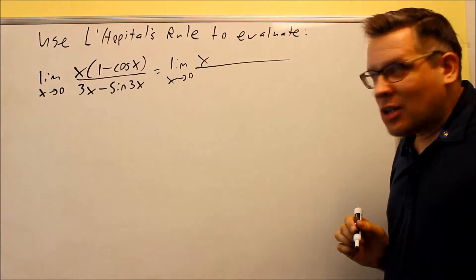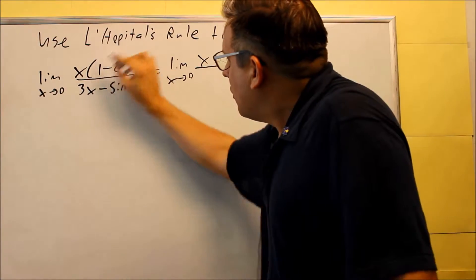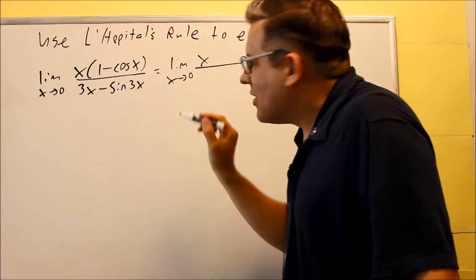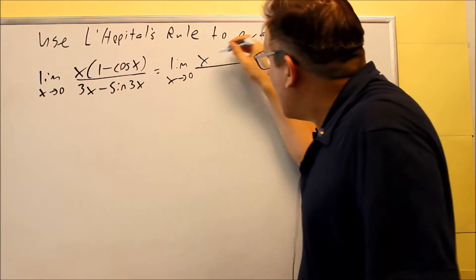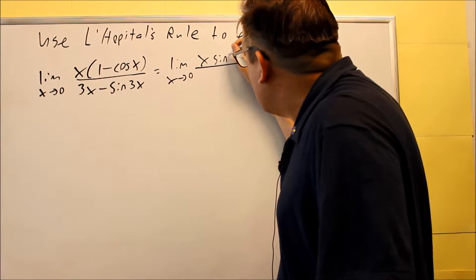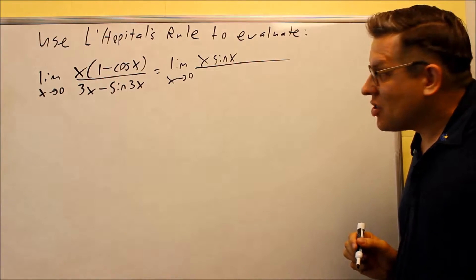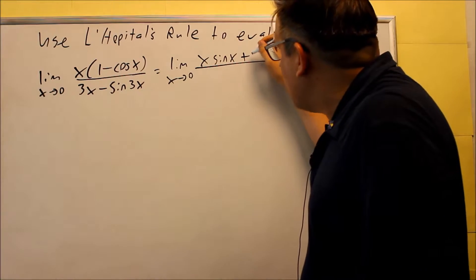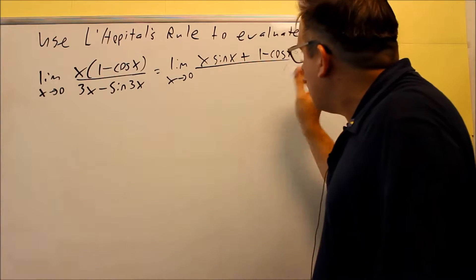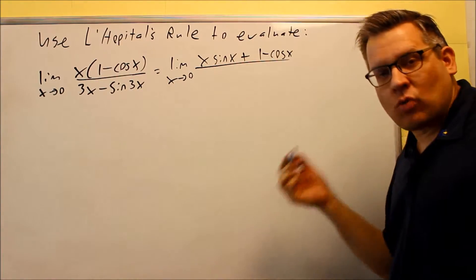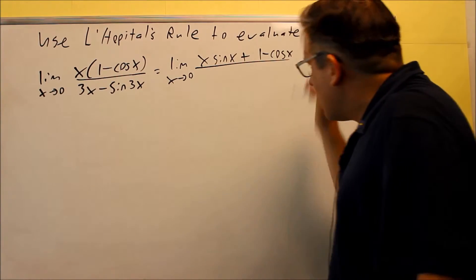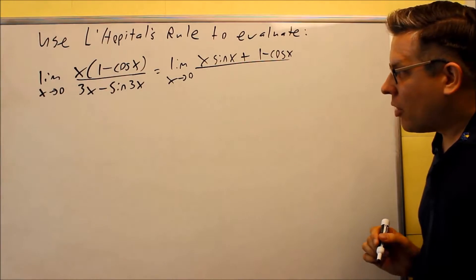We've got the first thing times the derivative of the second. The derivative of this of cosine is negative sine, but because you have a minus sine there, that means you're going to get a positive, so you're going to get x sine x. Then we have plus the second piece, 1 minus cosine x, and then the derivative of the first, derivative of x is 1, so we don't have to show that. So, that will be the derivative for the top part.